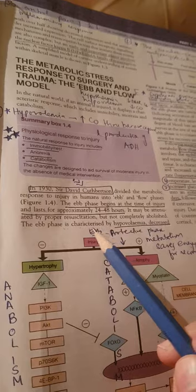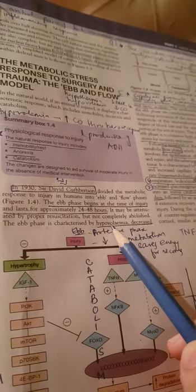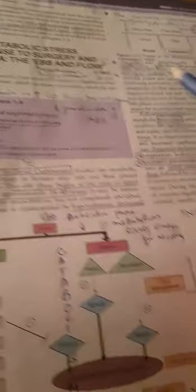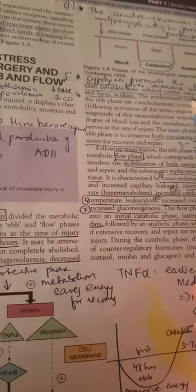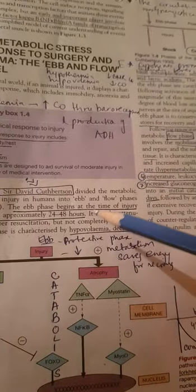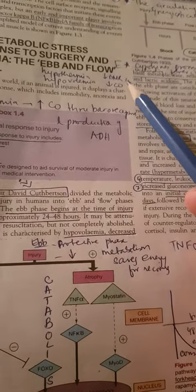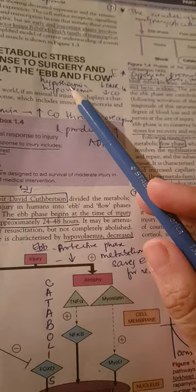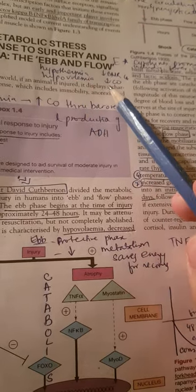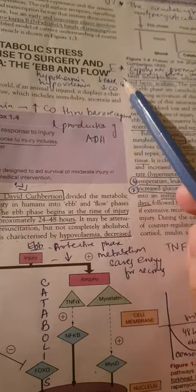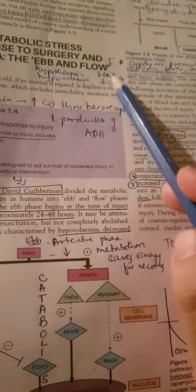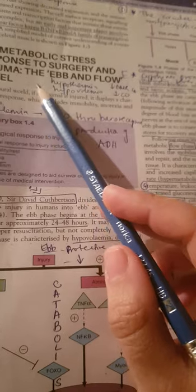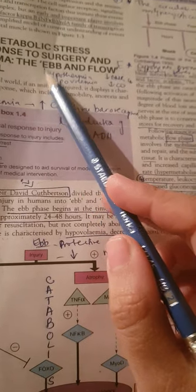It is characterized by hypovolemia, decreased basal metabolic rate, reduced cardiac output, and hypothermia. These are the four characteristics of ebb phase and it lasts for 24 to 48 hours.